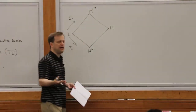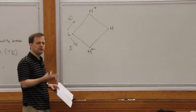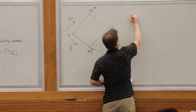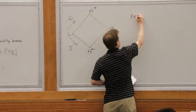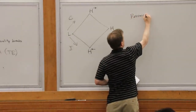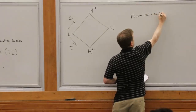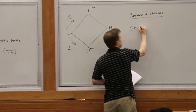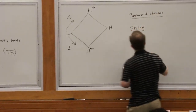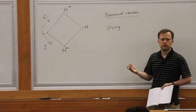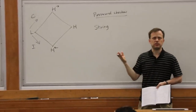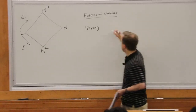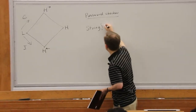Now I'm going to write out a password checker using these labels. The password is clearly something that should be secret and also trusted, so let's give that a label H.